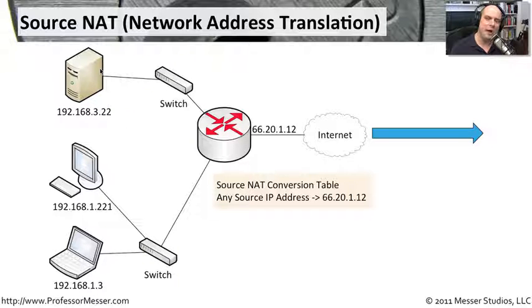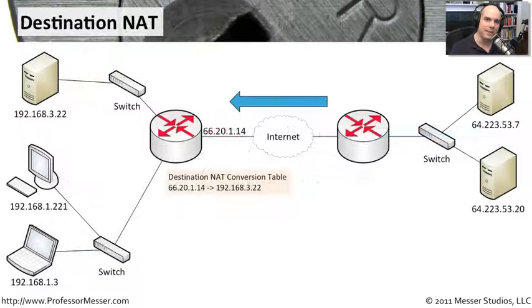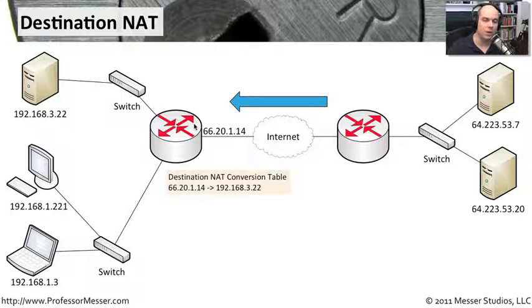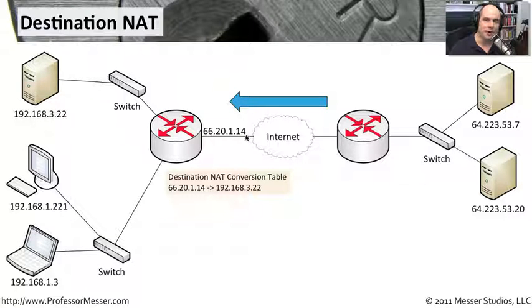But what if you do have web servers and email servers, and you would like people on the internet to be able to access those devices directly? Well, you do the NAT in the other direction — you do something called a destination NAT. You configure your firewall or your router to say, if you ever see an IP address coming in of 66.20.1.14, and that destination port number perhaps is TCP 80...